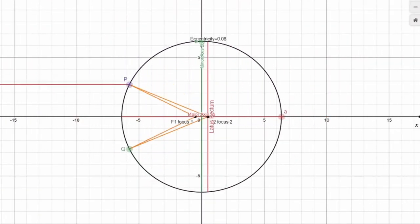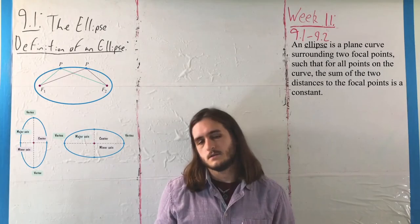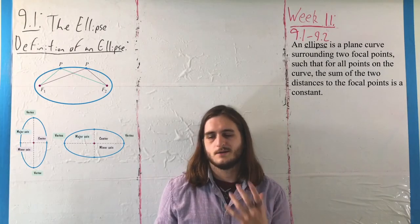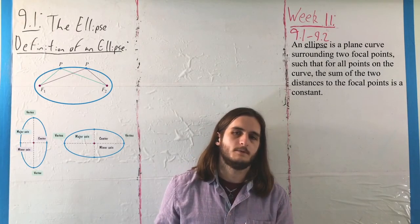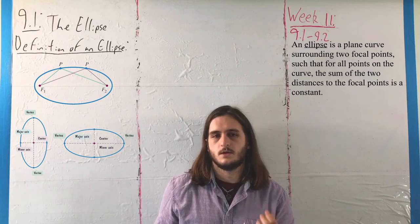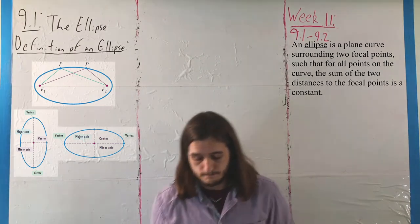The next thing we're going to see is how we can talk about these ellipses in their nicest form, which is what happens when we center them around the origin.